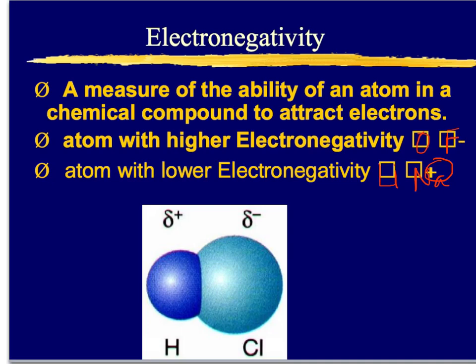Notice these low-electronegativity atoms are generally going to form positive ions, while the high-electronegativity atoms are going to form negative ions. If we go back to the octet rule and look at fluorine, fluorine has seven valence electrons — it only needs one more to meet the octet rule, so this is why it has high electronegativity. Sodium only has one valence electron, so it wants to give that up, meaning it does not have high electronegativity because it's trying to get rid of its electron to obtain that noble gas configuration.